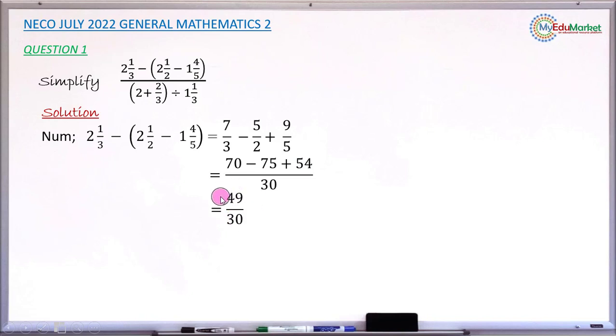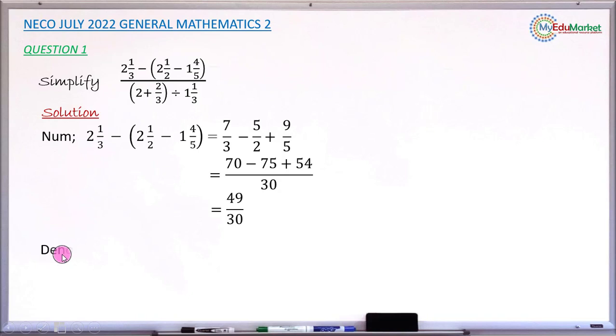Subtracting and adding those three numbers, if done correctly, gives you 49 over 30. This is the simplified form of the numerator. Now move to the denominator.